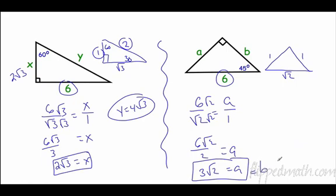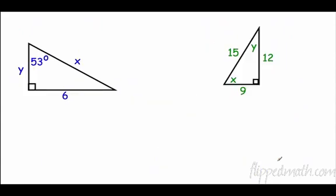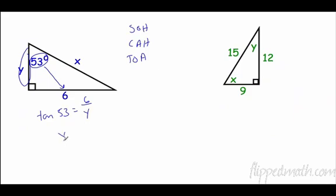Now we're going to do some trig, SOH CAH TOA. All right, so let's see here. I have an angle here, opposite that, and then this is adjacent. So opposite over adjacent is tangent, so tangent 53 equals opposite over adjacent. Now remember, the shortcut is just to switch, so y equals 6 divided by tangent 53. All right, and 6 divided by tangent 53, y equals 4.5.